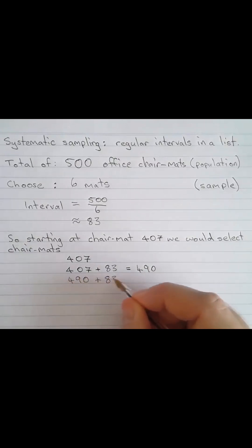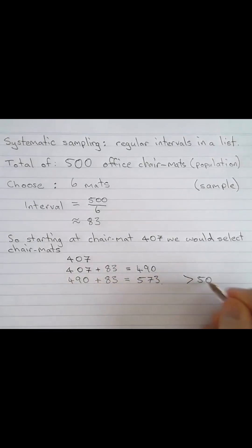490 plus 83 is equal to 573. Now the problem here is that's greater than the population that we have. So what we need to do is loop back around and start again.